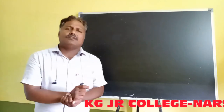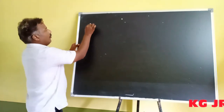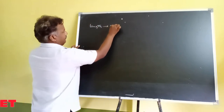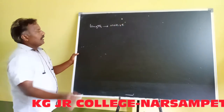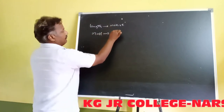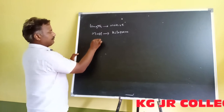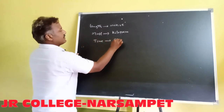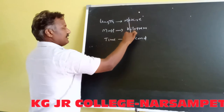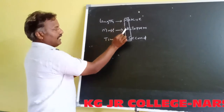Alright students, in the last class we discussed about four important physical quantities. One is length — its unit is meter. Another important physical quantity is mass — its unit is kilogram. Next, another important physical quantity is time — its unit is second. The first letters of these three units form the MKS system: meter, kilogram, second.